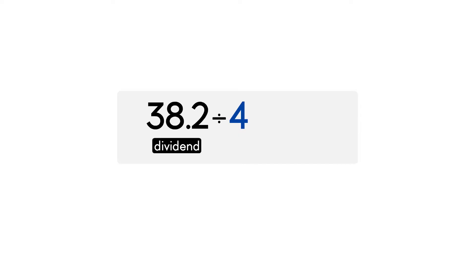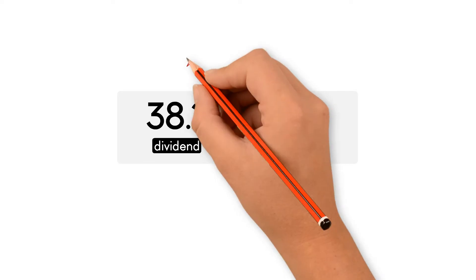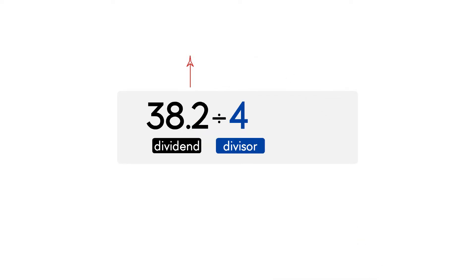Let's try an example: 38.2 divided by 4. 38.2 is the dividend and 4 is the divisor. To estimate, we can use a compatible number greater than the dividend, so the quotient will be greater than the actual quotient. In this case, the compatible number greater than the whole number part of the dividend, 38, is 40.